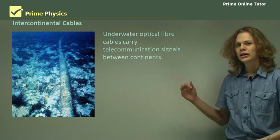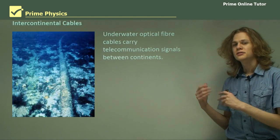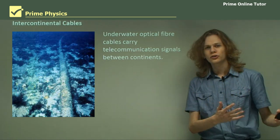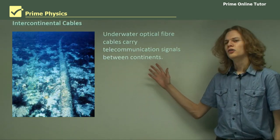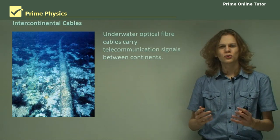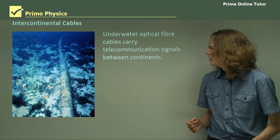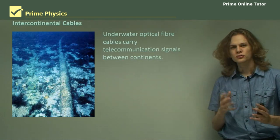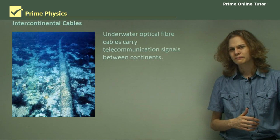So if we look at what carries things like internet and telecommunications between continents, we usually get things like this — underwater cables filled with bundles of optical fibers. So these will carry the signals between different continents. They tend to lie along the bottom of the ocean.